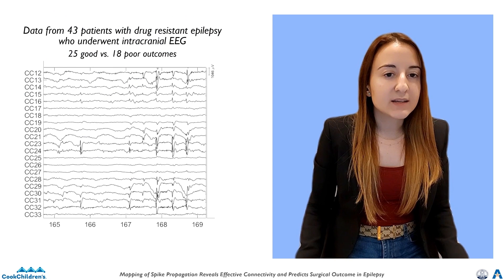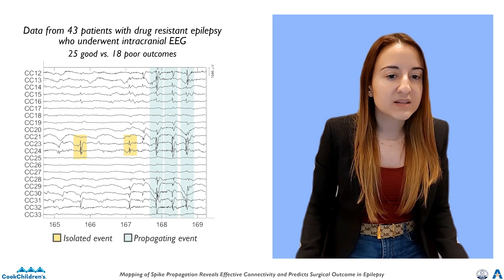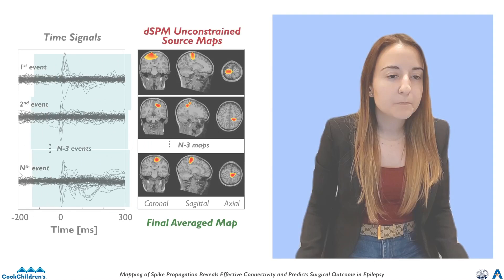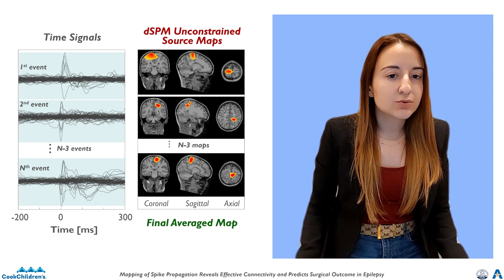We analyzed interictal invasive data from 43 drug-resistant epilepsy patients who underwent resective neurosurgery at Boston Children's Hospital. We identified spikes for each patient and classified them as isolated events if they were seen in fewer than three channels, or as propagating events. We then generated several source maps by translating each propagating event into the source domain, and these maps were averaged to create a final spike propagation map for each patient.